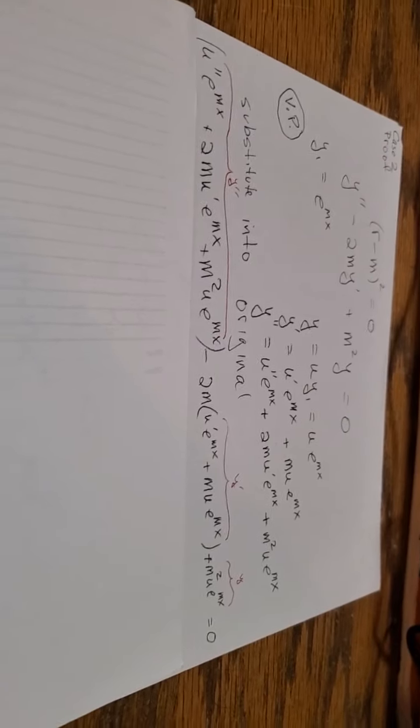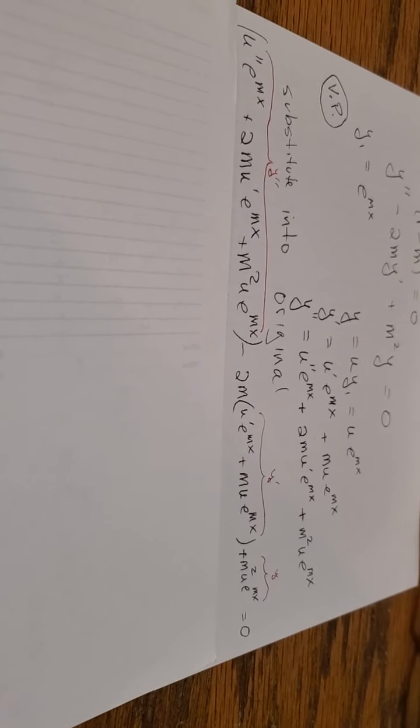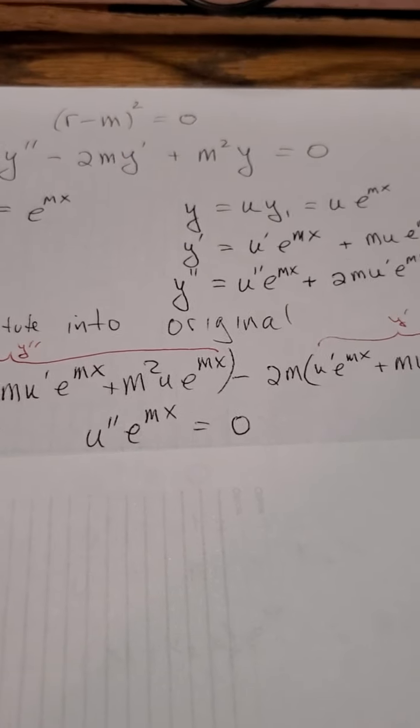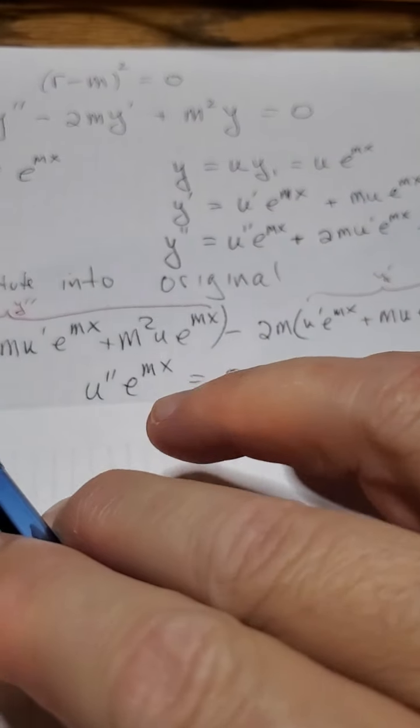I'm just plugging y prime, y double prime, and plain y into the differential equation. And if you look at this, what's going to happen is that every single thing is going to cancel out except u double prime e to the mx.